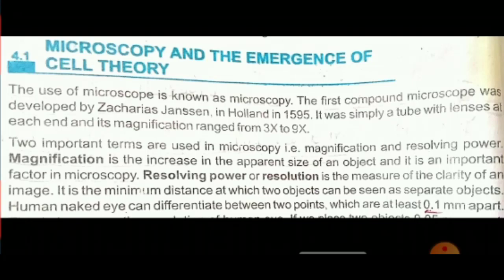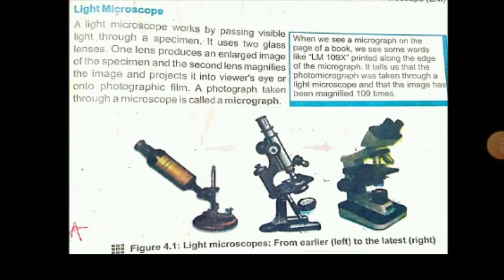The other term is resolution, or resolving power. Resolution is the measure of clarity of an image. It is the minimum distance at which two objects can be seen as separate objects. The resolution of the human eye is 0.1 millimeter, which means the human eye can only differentiate between two objects if they are at least 0.1 millimeter apart; otherwise it will not be able to differentiate them.